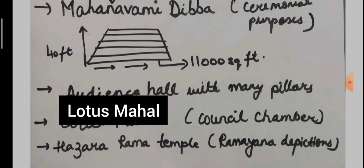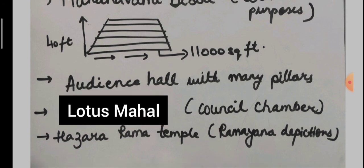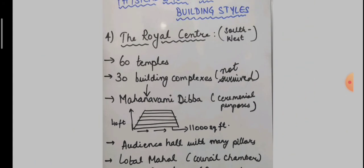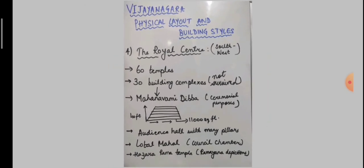Other buildings include the Lotus Mahal, which was basically the council chambers, and also a very beautiful temple, Hazara Rama Temple, which depicts the stories from Ramayana, have also been found in the Royal Center. Further, we are going to read about the sacred center in our next class.